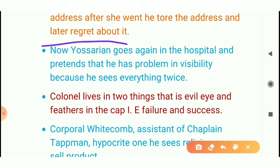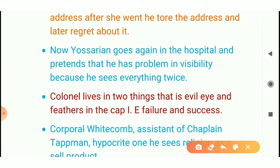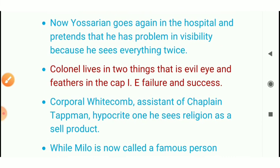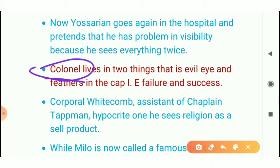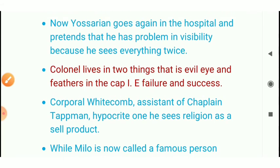Yossarian returns to the hospital and pretends to be sick again. He learned tactics from a soldier who had a disease — after that he gets hospitalized and doesn't have to go on missions. At this time a murder is discovered and after two hours someone dies. Colonel Cathcart tells Yossarian there are two things in life: evil eye and feathers in the cap, meaning failure and success. If he fails a mission, it's called evil eye; if he succeeds, it's feathers in the cap.